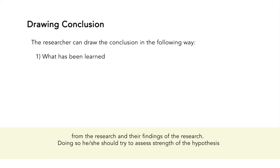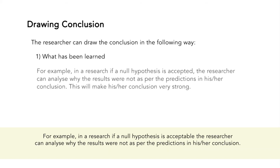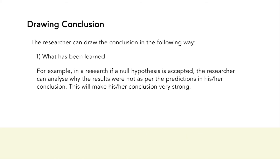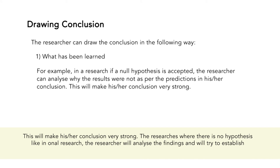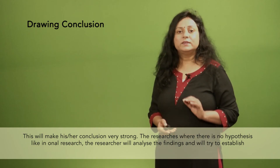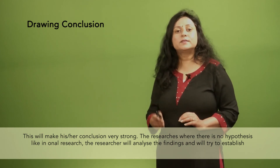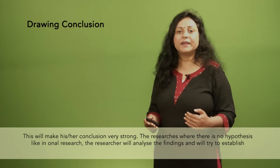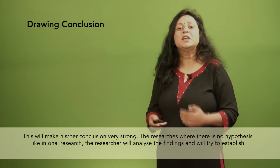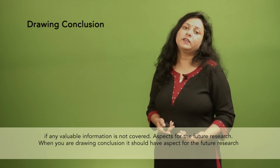In doing so, he or she should try to assess the strength of the hypothesis. For example, in a research where a null hypothesis is acceptable, the researcher can analyse why the results were not as per the predictions in his or her conclusion — this will make the conclusion very strong. For researches where there is no hypothesis, like observational research, the researcher will analyse the findings and will try to establish if any valuable information is not covered.